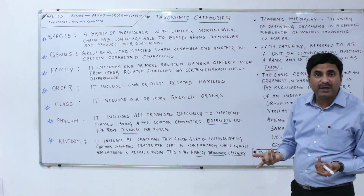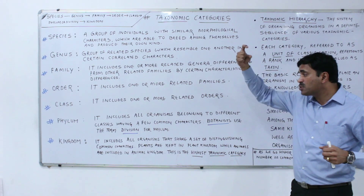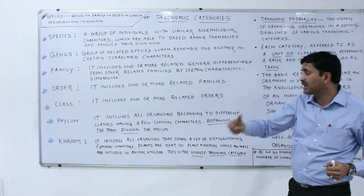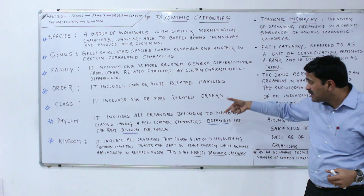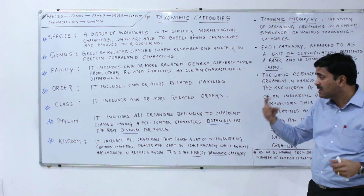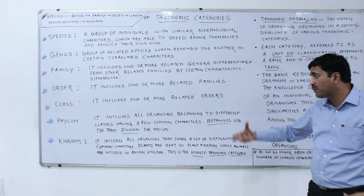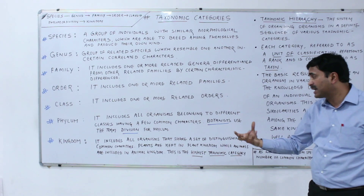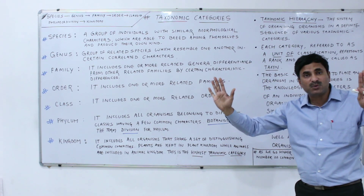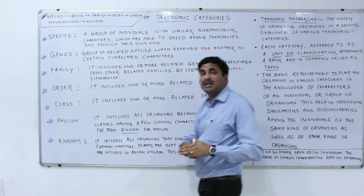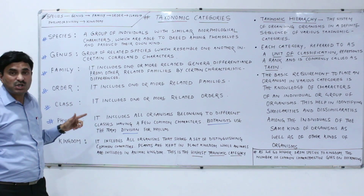The topmost and highest taxonomic category is the kingdom. The kingdom includes all organisms that share a set of common characteristics. For example, plants are recognizable as plants and are kept in the plant kingdom, while animals are kept in the animal kingdom. So the kingdom is the highest taxonomic category.